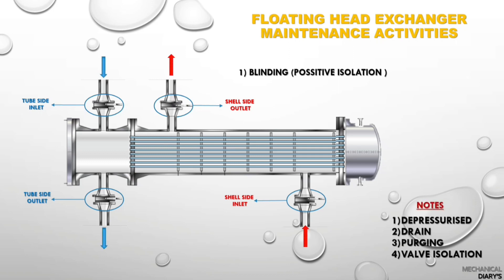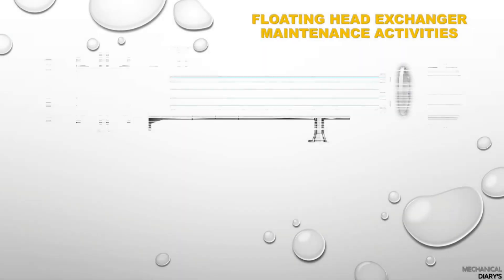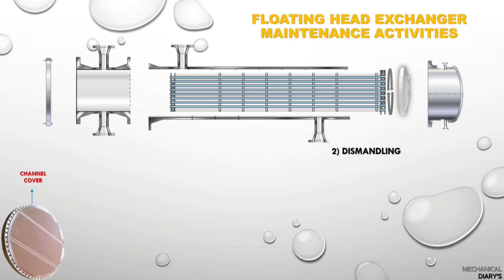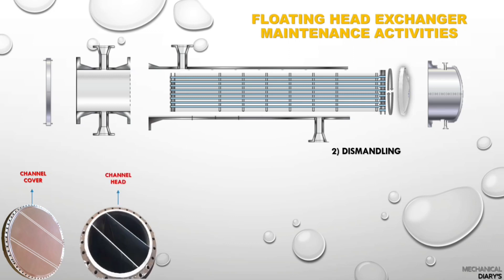Blinding is one of the most important and dangerous activities, so you must follow all safety rules and regulations. After blinding, we have to make sure the exchanger has been flushed, purged, and confirmed safe. Then we can go for dismantling. During dismantling, you should mark each and every part — this will help you when boxing up the exchanger.